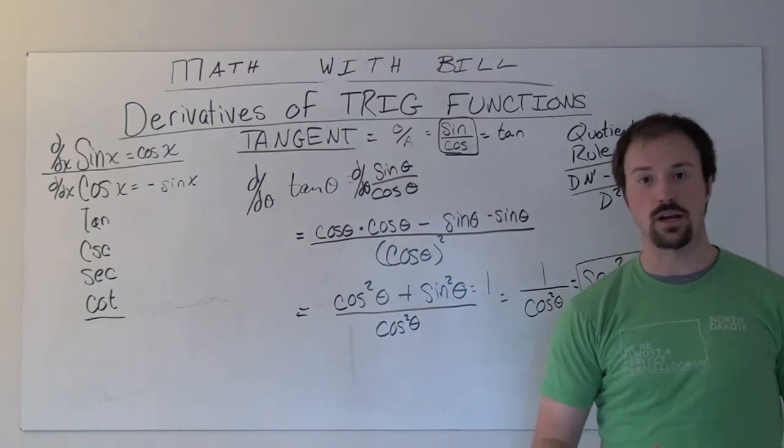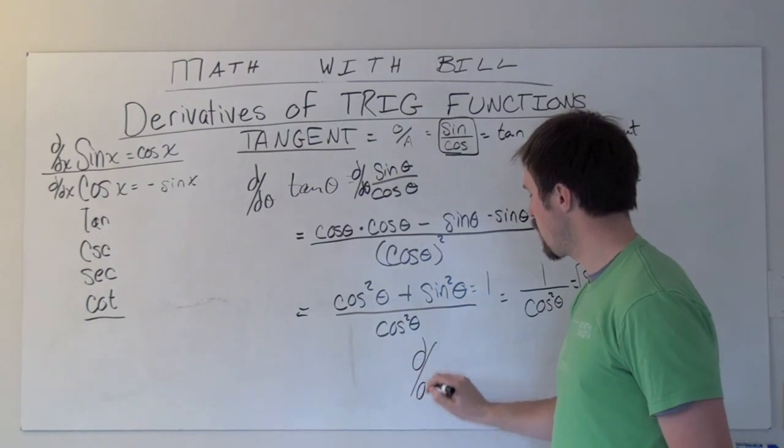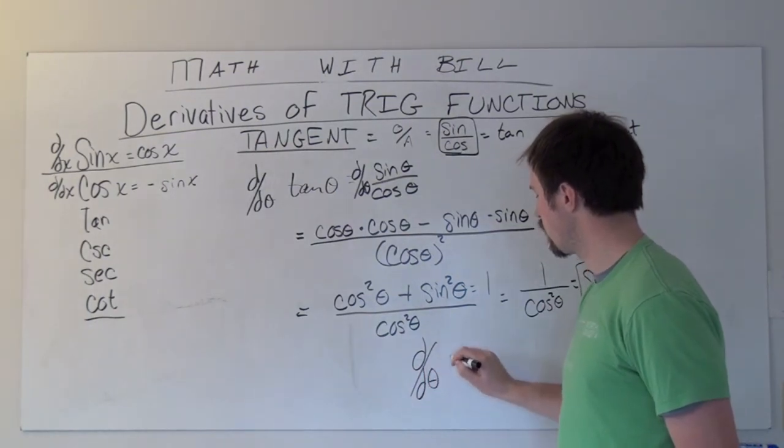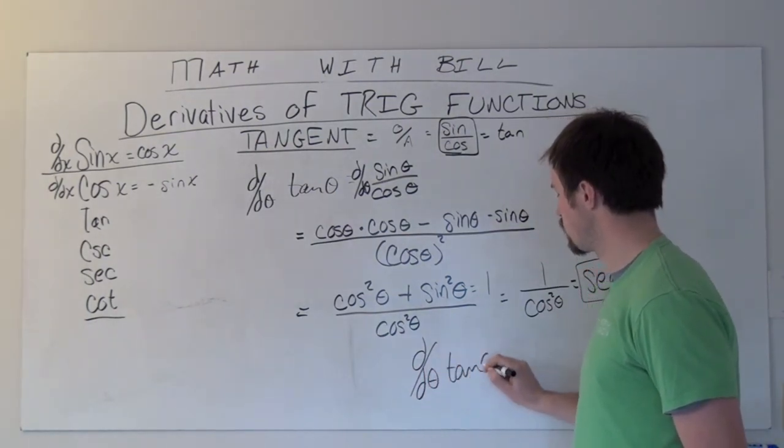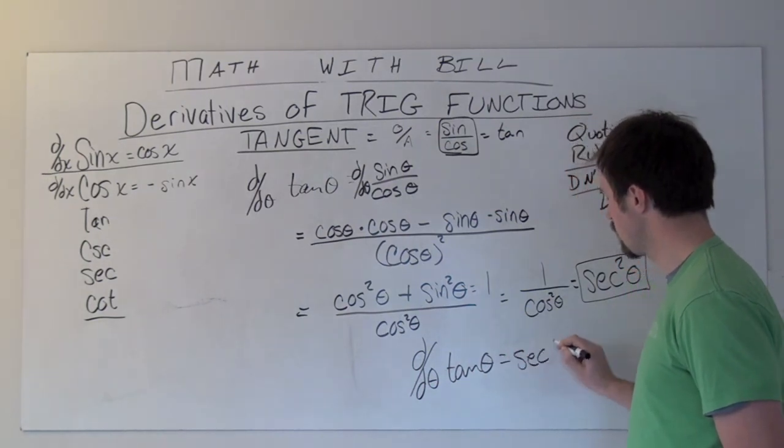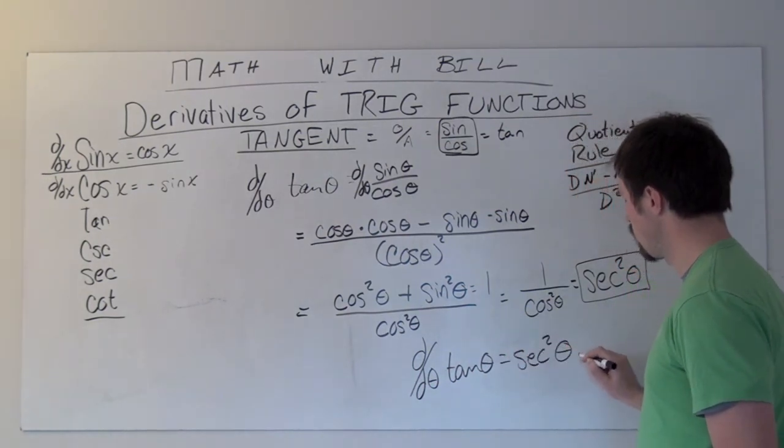So in summary, the derivative with respect to theta of tangent theta is secant squared theta.